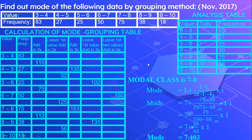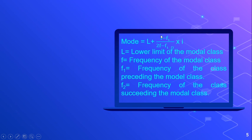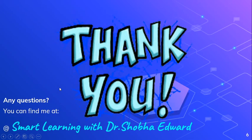This is how we work with the grouping table and analysis table. We use this method only when the question asks us to use the grouping and analysis table. To recap: for the grouping table, add frequencies in 2s; leave the first frequency and add in 2s; add in 3s; leave the first frequency and add in 3s; leave the first two frequencies and add in 3s. Then prepare the analysis table and calculate mode using the formula L + (F − F1) / (2F − F1 − F2) × I. Thank you.